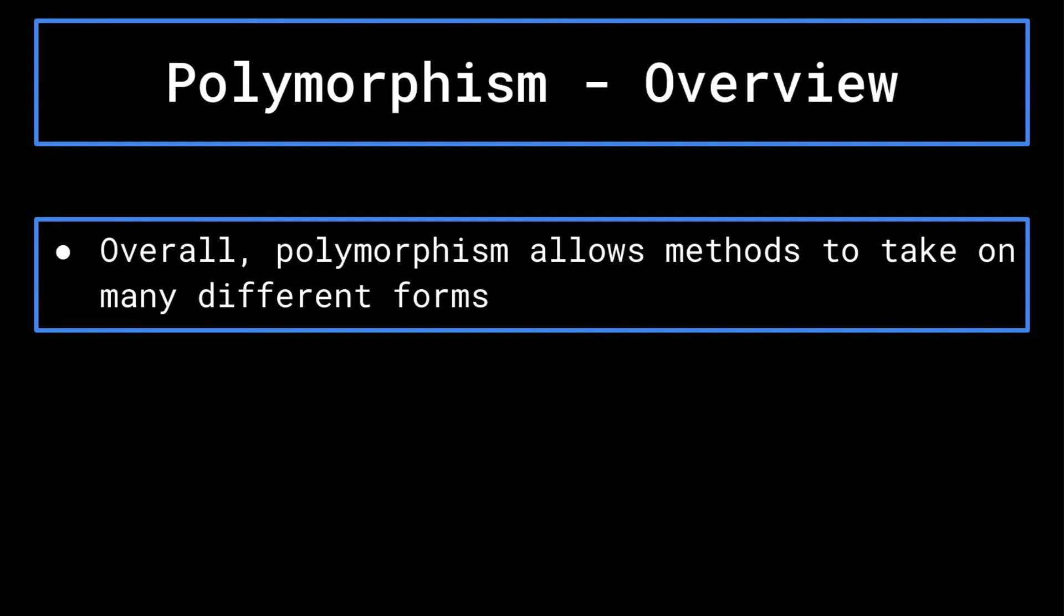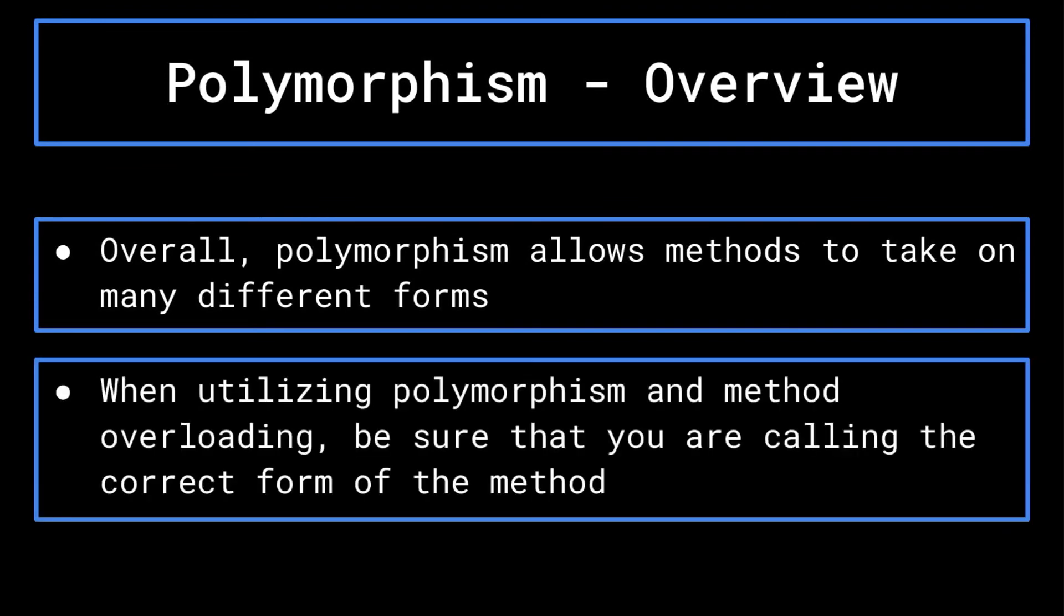Overall, polymorphism simply allows methods to take on many different forms. It can be very useful in that it allows methods of the same name to exist both in the same class and in different classes. However, you must be careful to ensure that you are calling the correct form of the method that you want so that your program can function as intended.